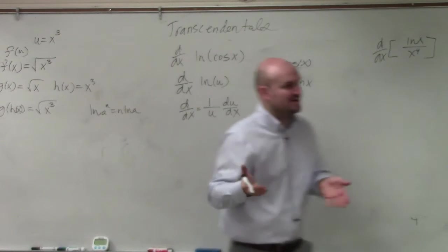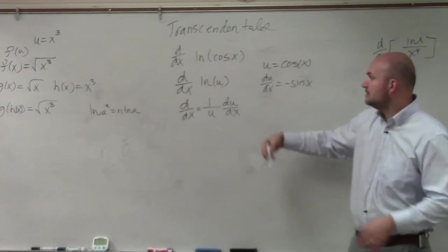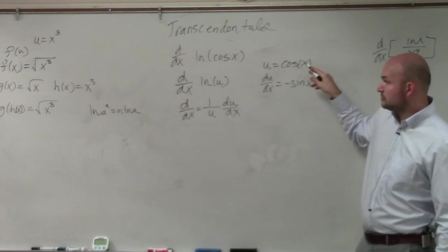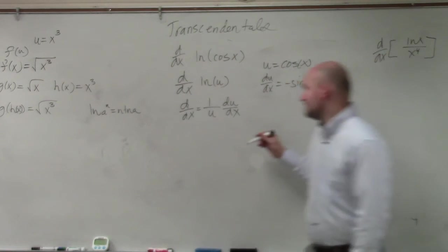Would everybody agree implicitly deriving ln of u would be 1 over u du dx? I know what u is, which is cosine of x, and I know what du dx is, which is negative sine of x.